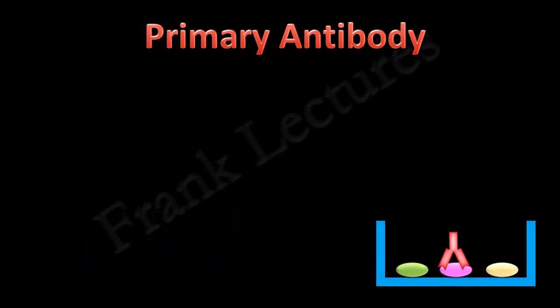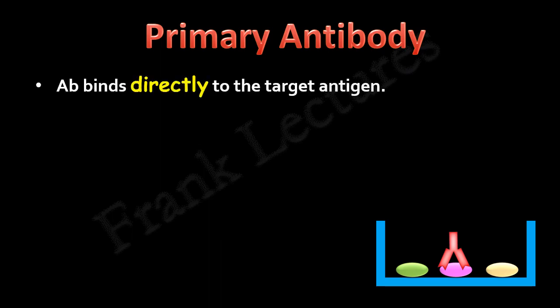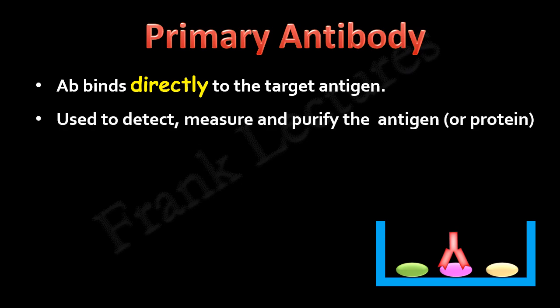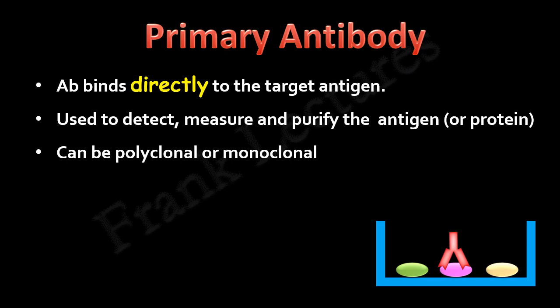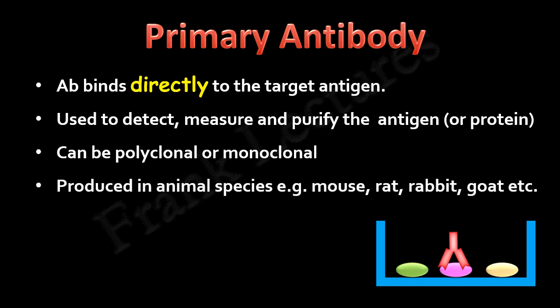Primary antibodies are the antibodies that directly bind to their specific antigens. These antibodies are used to detect, measure, and purify the antigen or protein of interest. They are produced in animal species such as mouse, rat, rabbit, goat, etc.